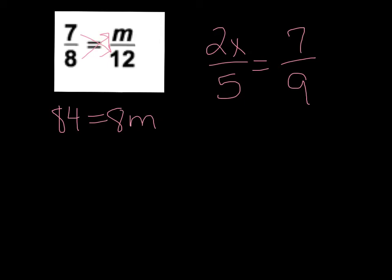Now we're still going to remember we're going to isolate the m, so that means we're going to divide by 8. Those 8s cancel, I'm left with my m. Now, 8 won't go into 84 evenly, so you can simplify.